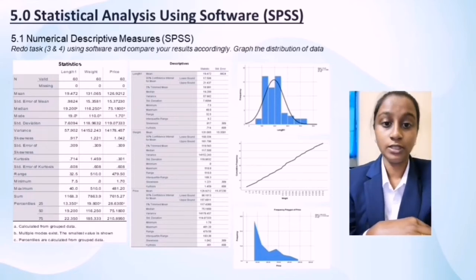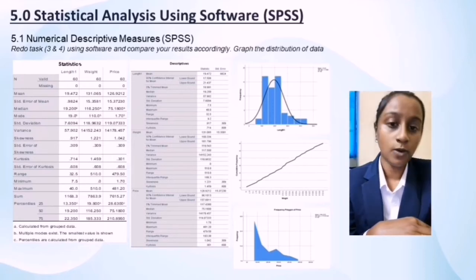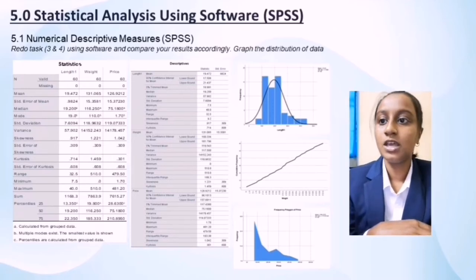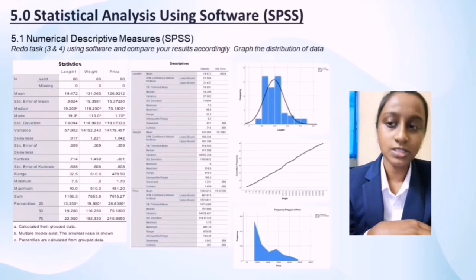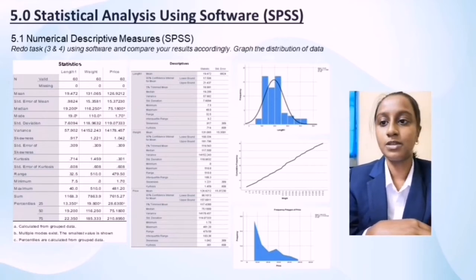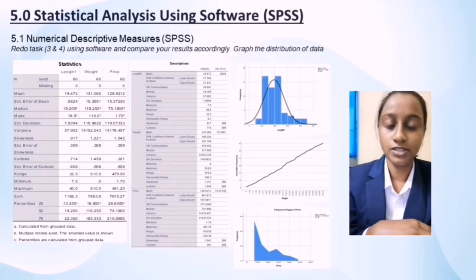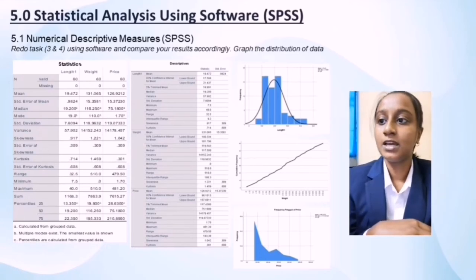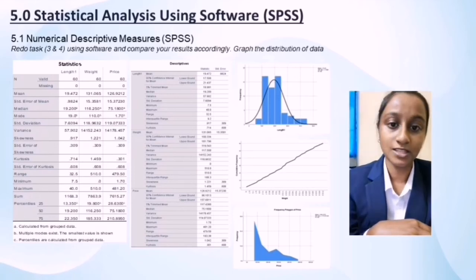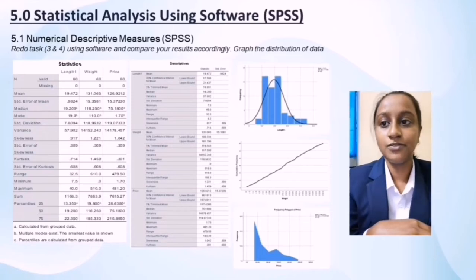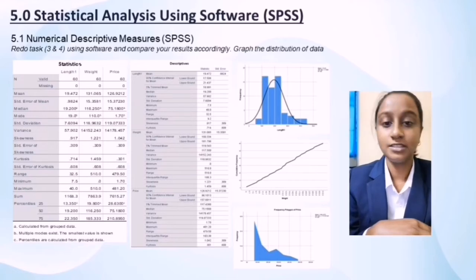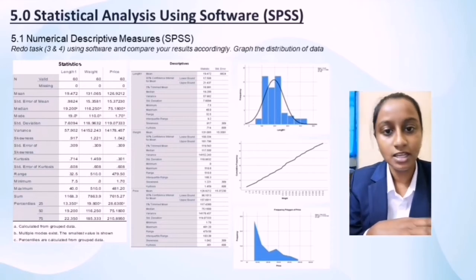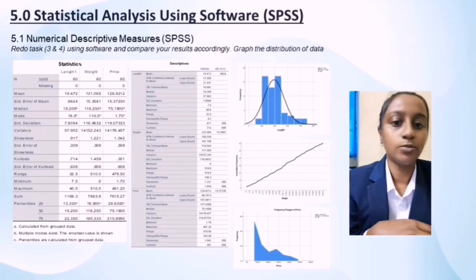I am going to present section 5.0, statistical analysis using SPSS. We downloaded SPSS according to the tutorial. In 5.1, we performed numerical descriptive measures in SPSS. I found that there are two tables produced, covering the overall variables — length 1, weight and price — showing their mean, median and mode, as well as standard deviation, variance and range. We can also see descriptive statistics separately for length 1, weight and price. From the statistics table, a dot indicates a value calculated from grouped data, and where multiple modes exist, the smallest is shown in parentheses.